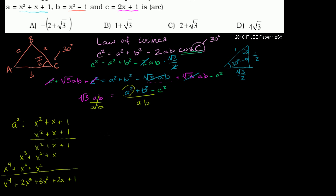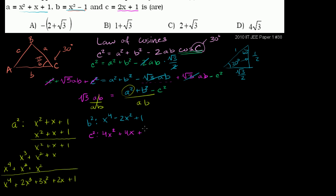What's b²? That looks more straightforward. B = x² − 1, so b² = x⁴ − 2x² + 1. And c² — c = 2x + 1, so c² = 4x² + 4x + 1, from squaring the binomial.